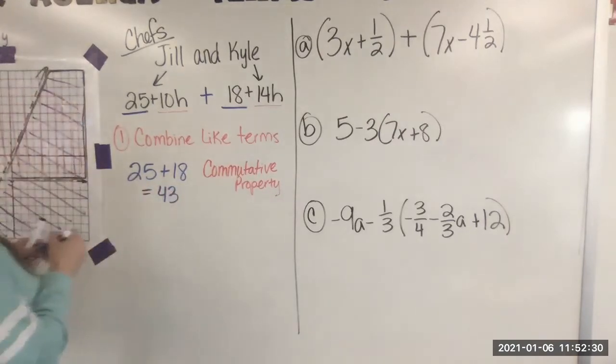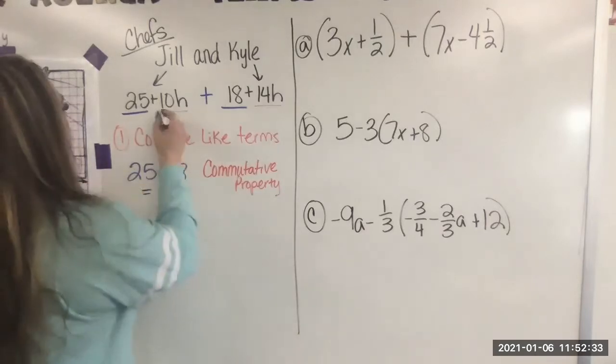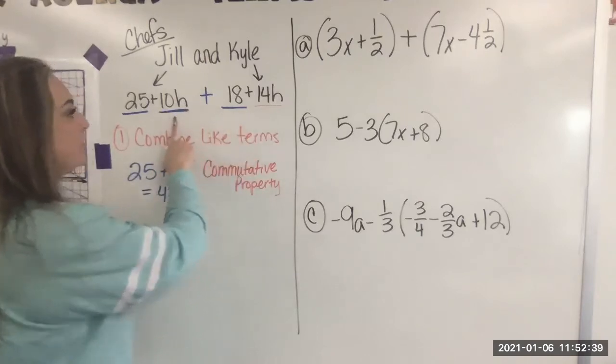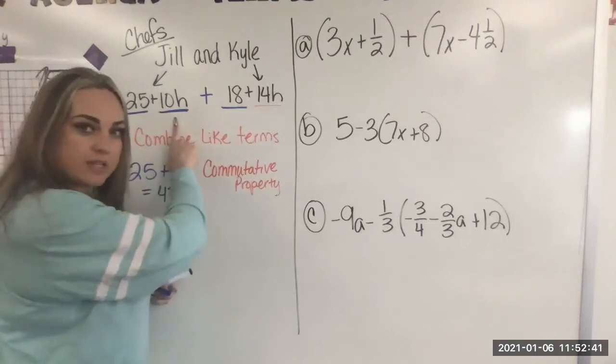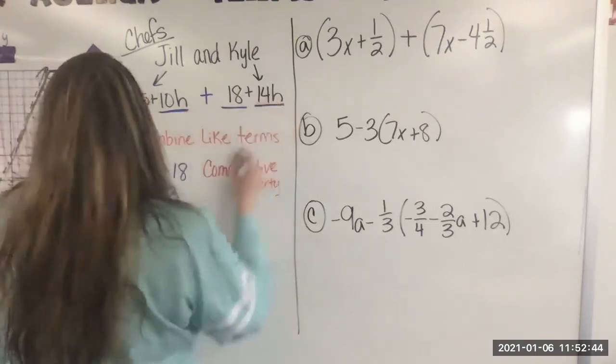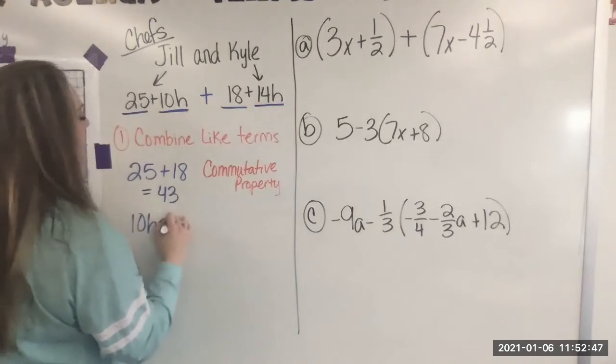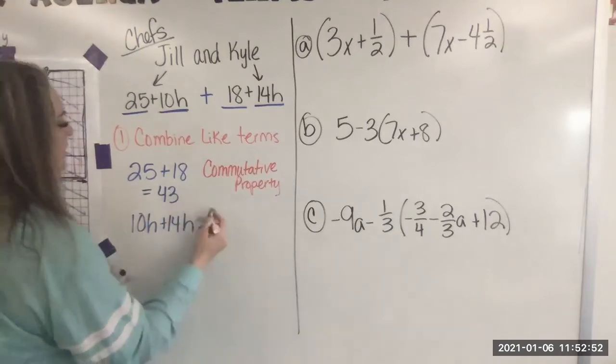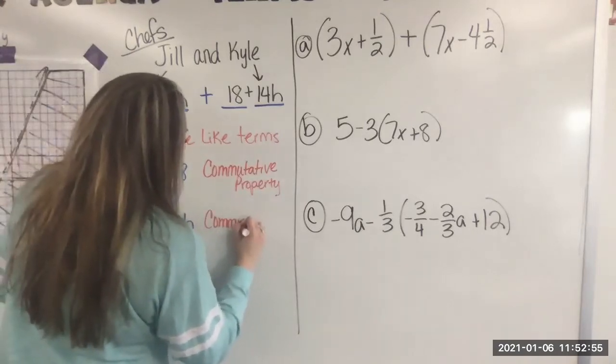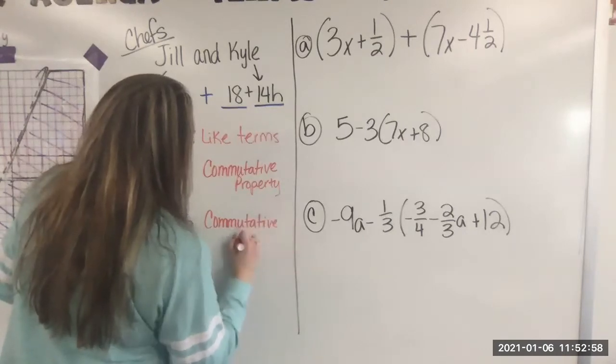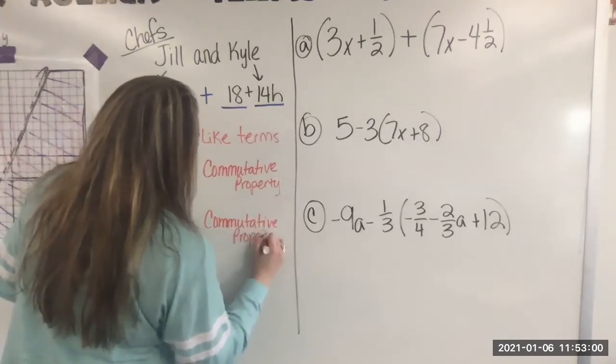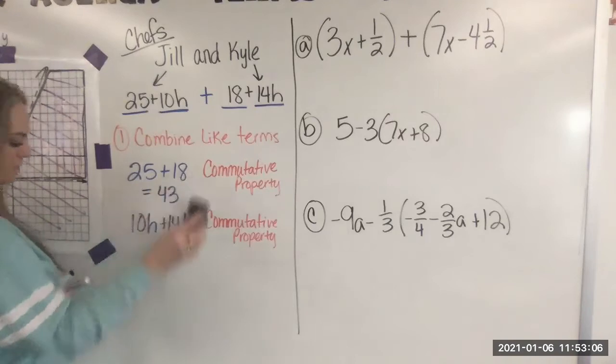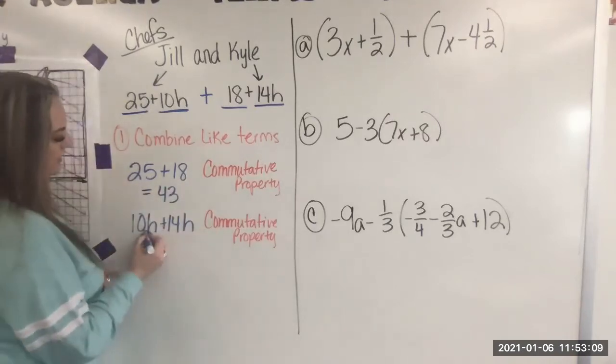Now we're going to look here. Is there a term that can be combined with 10H? So I'm looking for another term that also has an H. Yes, this one. So now I can add 10H plus 14H. And again, commutative property allows me to move those next to each other.